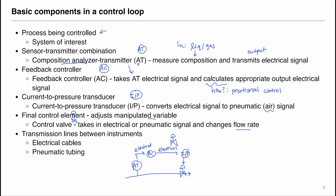We want to distinguish the electrical signal transmitted by electrical cables: we use dashed lines for electrical signals. For pneumatic tubing, we use a different symbol — double dashes on a solid line — to represent the air signal.